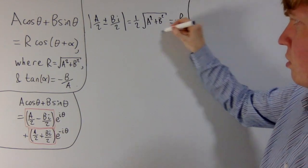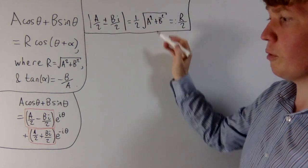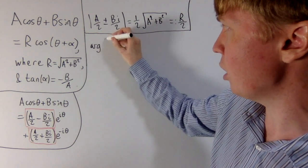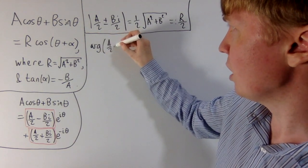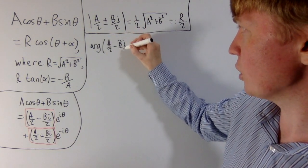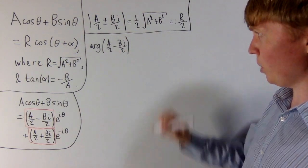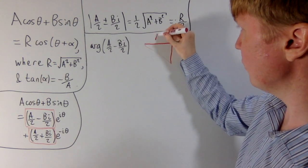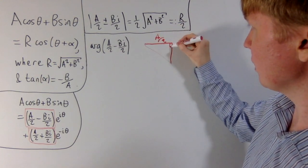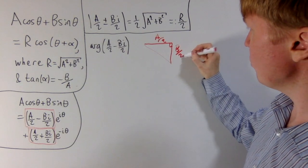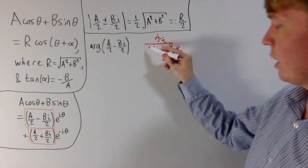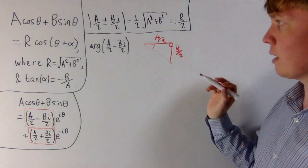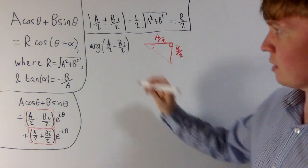It'll make sense in a moment why we choose to keep this factor of a half there. So that's the modulus done, so what about the argument of each of these? Let's start with the first one, the argument of A over 2 minus B i over 2. If you imagine just for now that A and B are both positive, then the picture kind of looks like this: you go A over 2 along in your complex plane, and then you go B over 2 down, and this would be our angle here. So the actual angle here would be arctan of B over 2 over A over 2, so it would be arctan of B over A. But then we want to take the negative of that to be our argument.